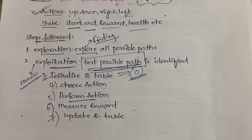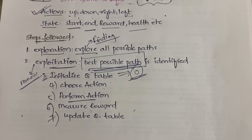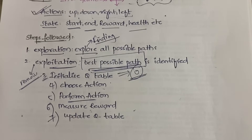So that's how the Q-learning process works. In Q-learning, you need to understand what policy, reward, and action are, and the two main factors: the Q-function and the Q-table, along with these steps. That's all for this video. In the next video I'll be explaining the temporal difference algorithm. If you have any doubts, let me know in the comment section, and thanks for watching.